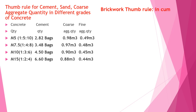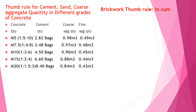M15 (1:2:4): requires 6.6 bags of cement per cubic meter, 0.88 m³ of coarse aggregate, and 0.44 m³ of fine aggregate. For M20, approximately 0.5 m³ of fine aggregate is required for every cubic meter of concrete.